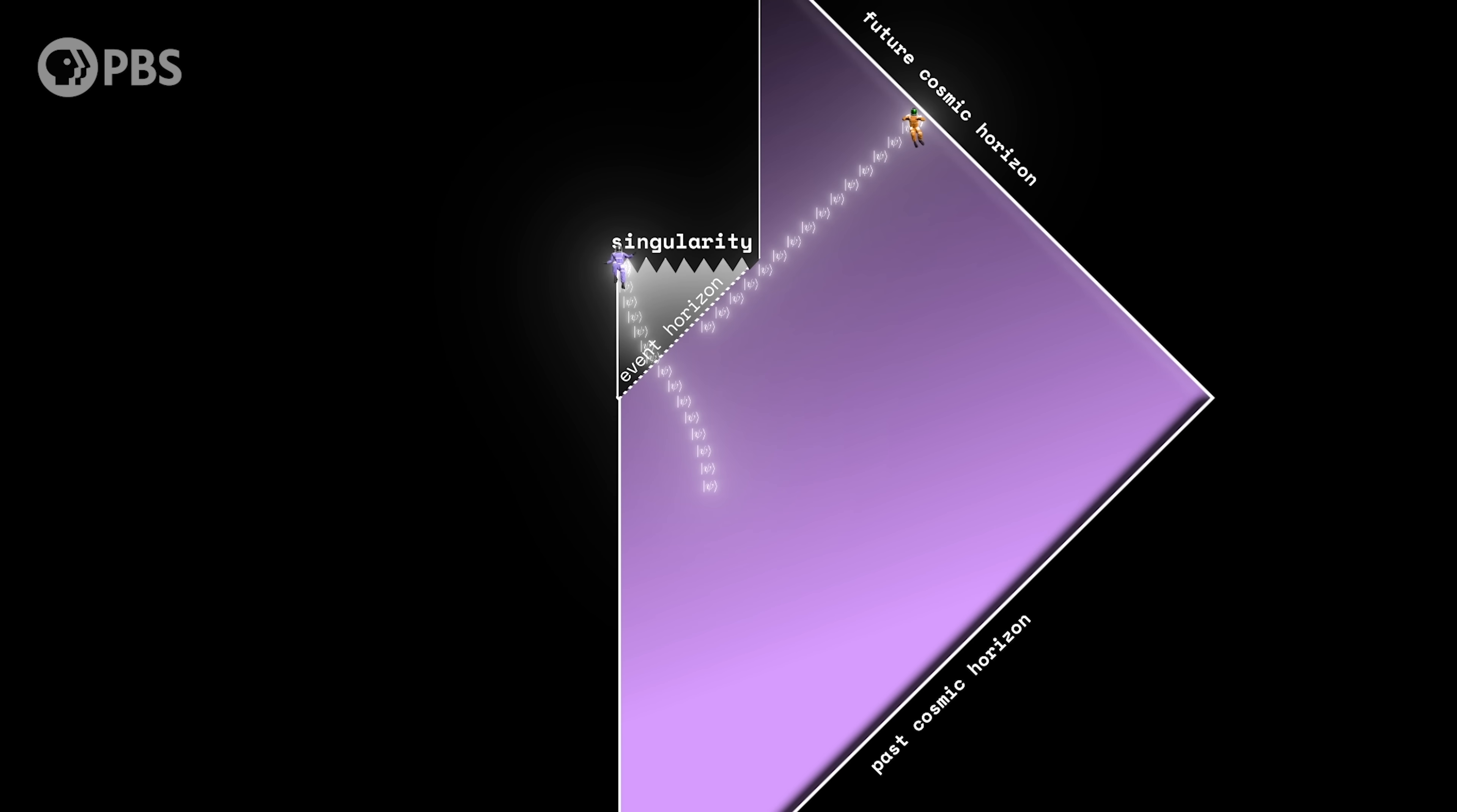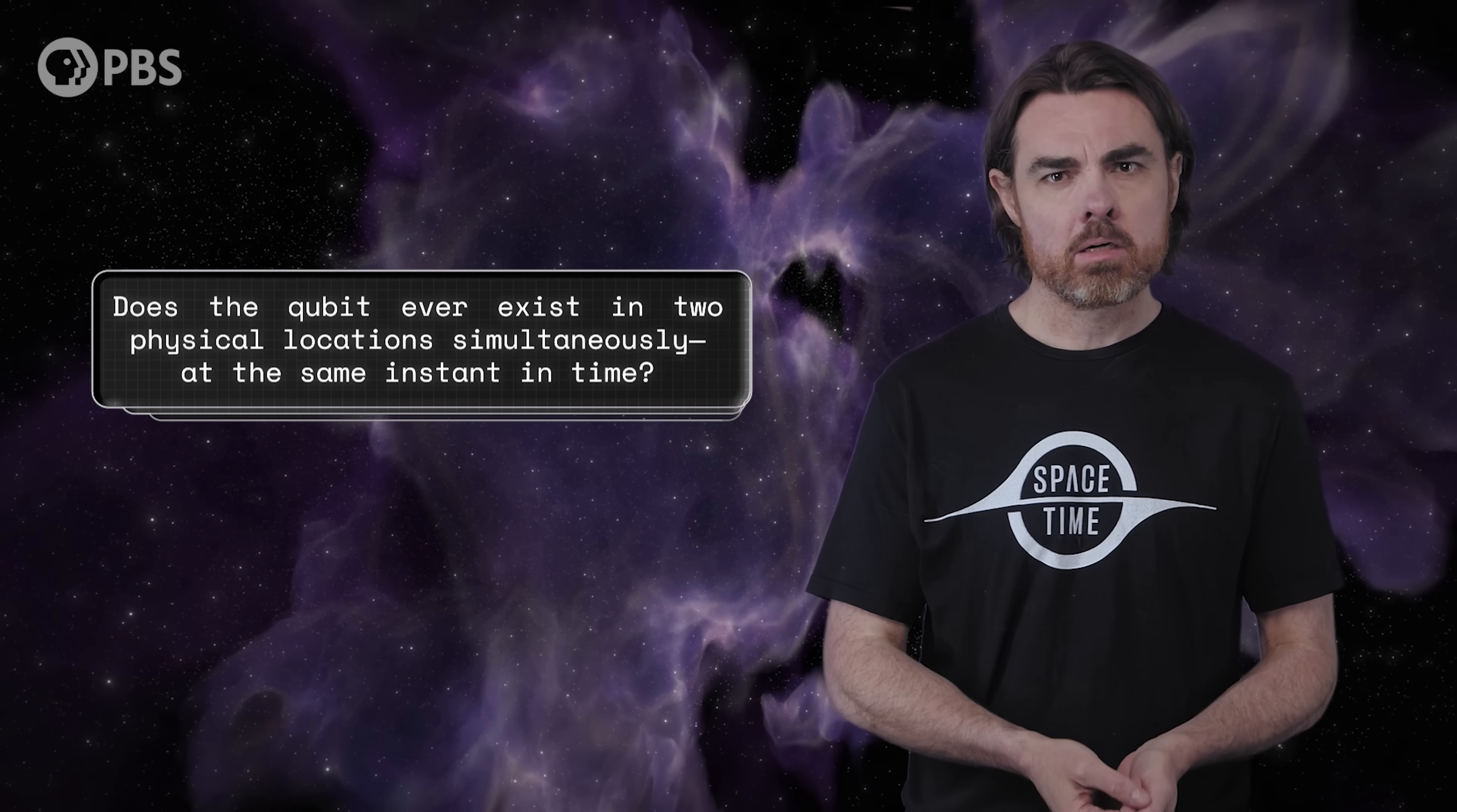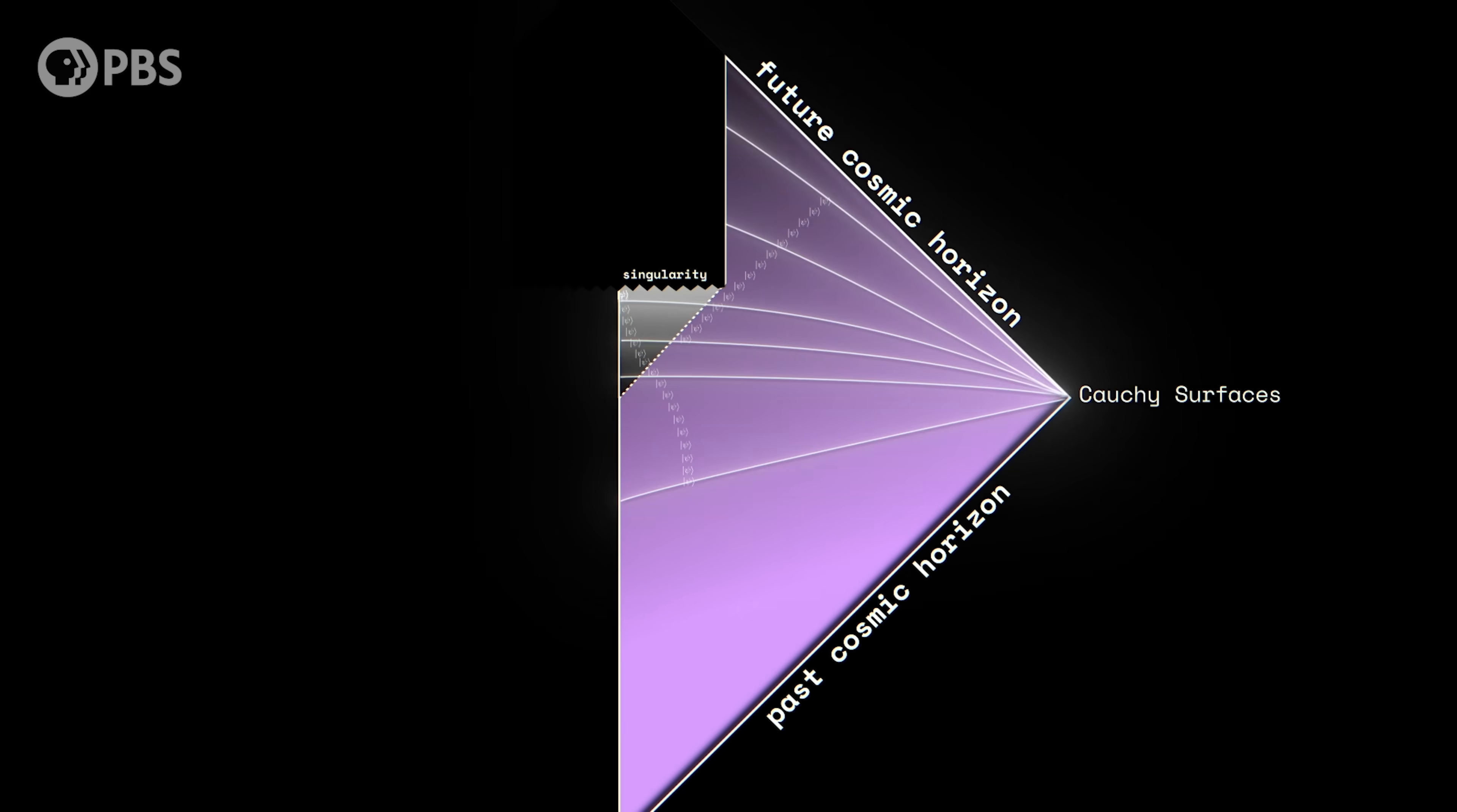From a perspective outside space and time, the quantum bit in some sense exists at all of these spacetime points. But does it ever exist in two physical locations simultaneously at the same instant in time? Well, there's no absolute definition of simultaneous in Einstein's relative universe, but these lines on the Penrose diagram could be considered to describe different spatial locations at the same moment in time.